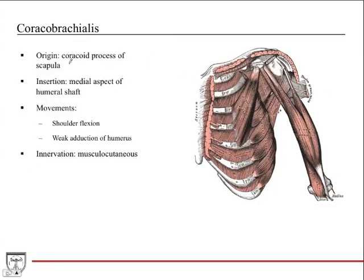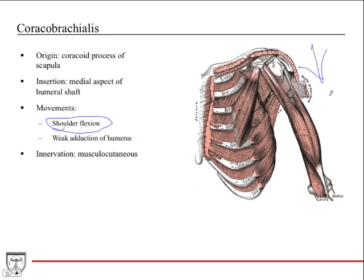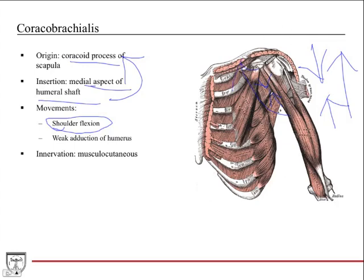The coracobrachialis originates from the coracoid process — the bony prominence that projects anteriorly from the scapula — and inserts onto the medial aspect of the humeral shaft. The main movement is shoulder flexion. Since muscles contract and shorten and pull, this muscle pulls the medial humeral shaft toward the coracoid process, flexing the shoulder joint. It also provides weak adduction of the humerus, pulling the arm toward the body.